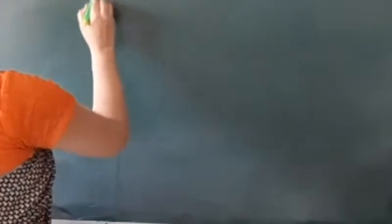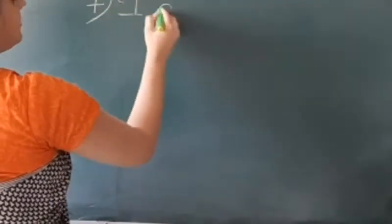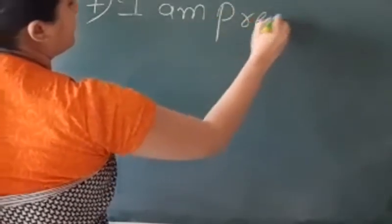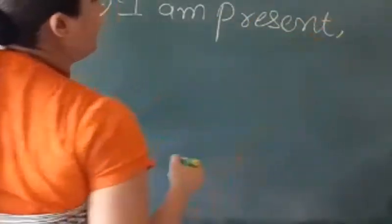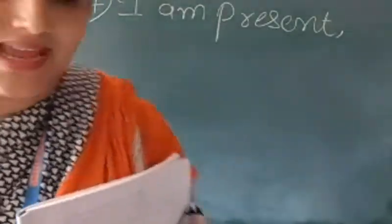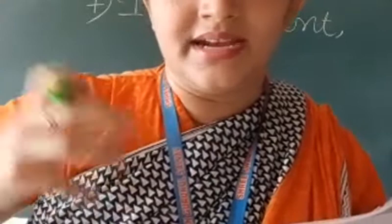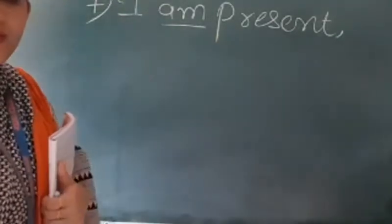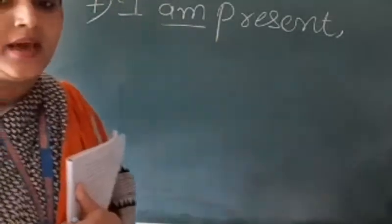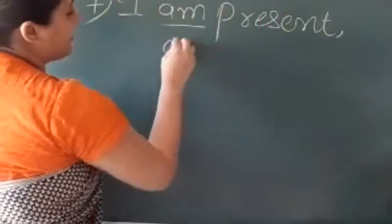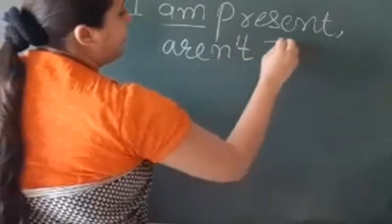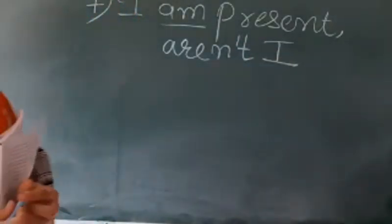The seventh one is 'I am present.' Now in the previous session while I was explaining question tags, I told you that when there is 'am' and the sentence is positive, you have to use 'are.' But the question tag here will be negative. So what will you use? Aren't I?